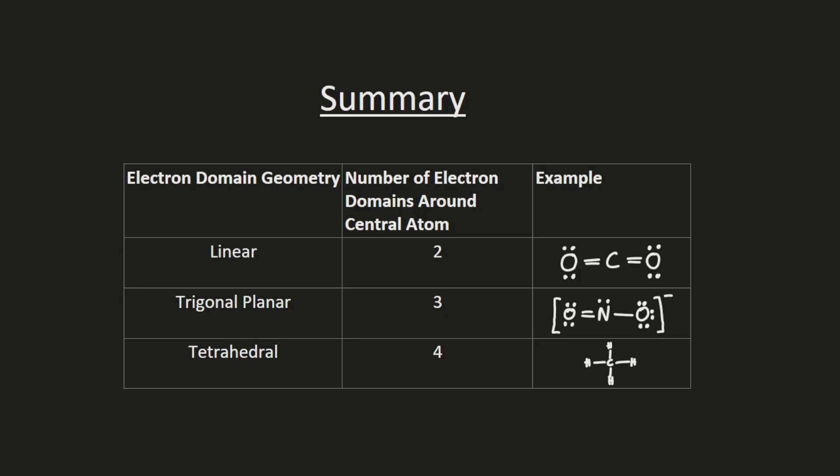So those are the three types of electron domain geometries you need to know for chemistry SL: two electron domains around the central atom means linear, three means trigonal planar, and four means tetrahedral. Keep in mind the differences between electron domain geometry and molecular geometry. You only need to count the number of electron domains to find electron domain geometry — you don't have to consider whether the electron domains are bonding pairs or lone pairs as with molecular geometry. For electron domain geometry, just count the number of electron domains around the central atom.